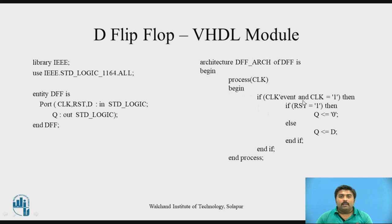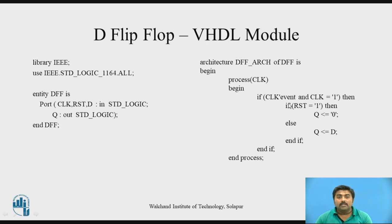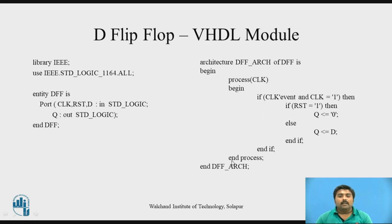Inside the process: 'if clock'event and clock = 1'. The tick-event (apostrophe event) is an attribute — it checks whether an event is occurring on the clock signal. If an event is occurring and the clock equals 1, we proceed. Then, if reset is 1, output Q is 0; else Q equals D. Finally, 'end if', 'end process', and 'end architecture' — this is the complete VHDL module for the D flip-flop.